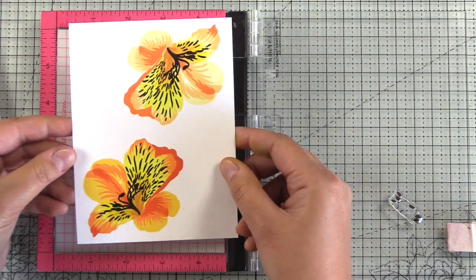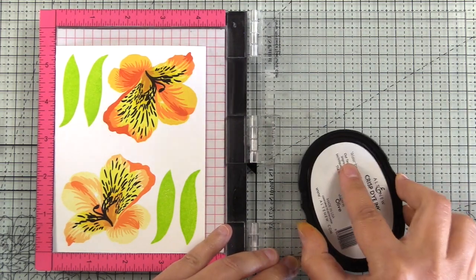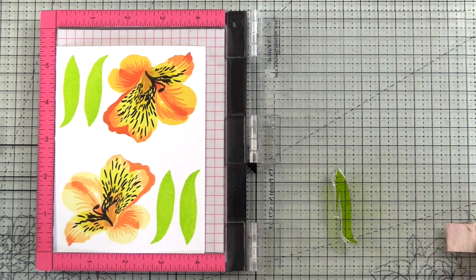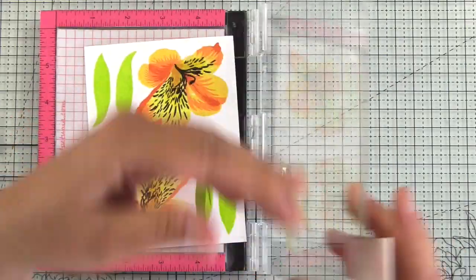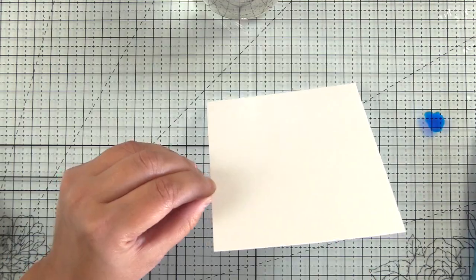It's super easy to layer this stamp set. The leaves are stamped with bamboo, olive, and moss crisp dye inks, which is from the Tropical Forest ink family.